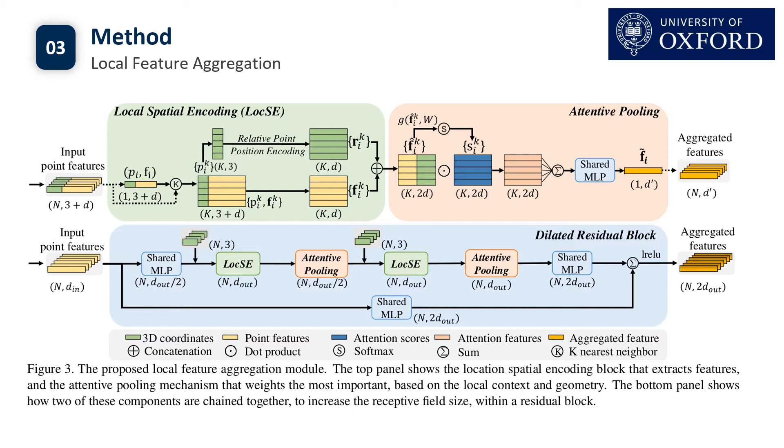Specifically, it consists of three neural units: local spatial encoding, attentive pooling, and finally the dilated residual block.